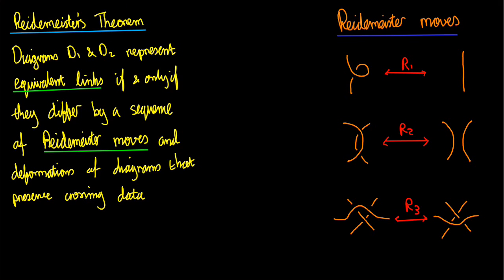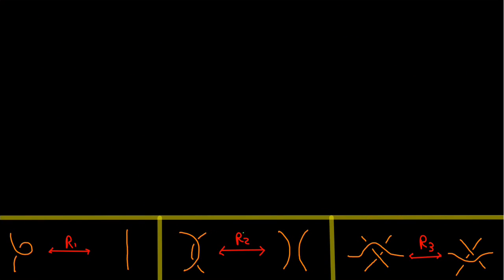Enough waffling. Here are some examples. I've listed the three Reidemeister moves down the bottom there. Let's try and prove for ourselves that this knot diagram here is equivalent to this knot diagram here. The way we're going to prove that is, we're sort of making two statements at once. We're saying that this knot thought of as living in R3 is equivalent to this knot living in R3, or we're saying that this diagram and this diagram differ by a Reidemeister move. Let's see that the diagrams differ by a Reidemeister move.